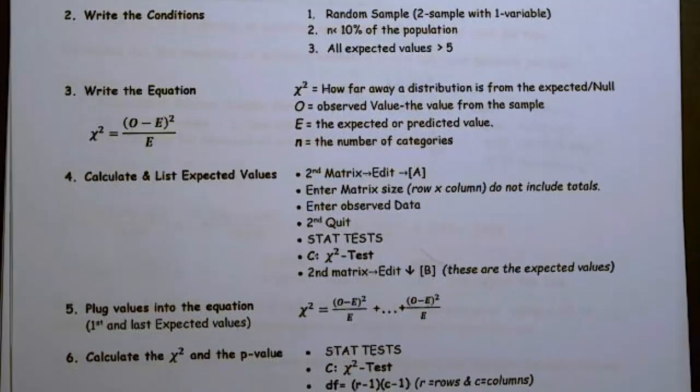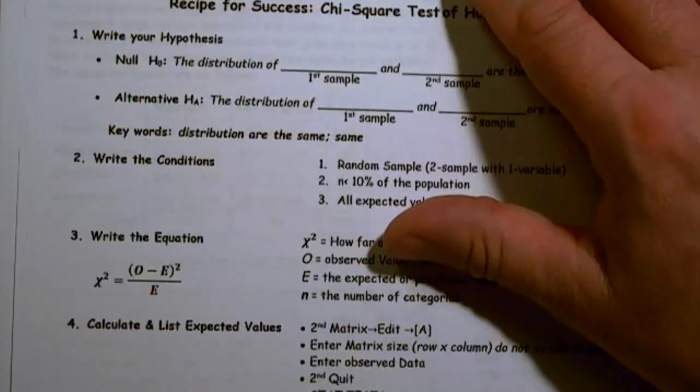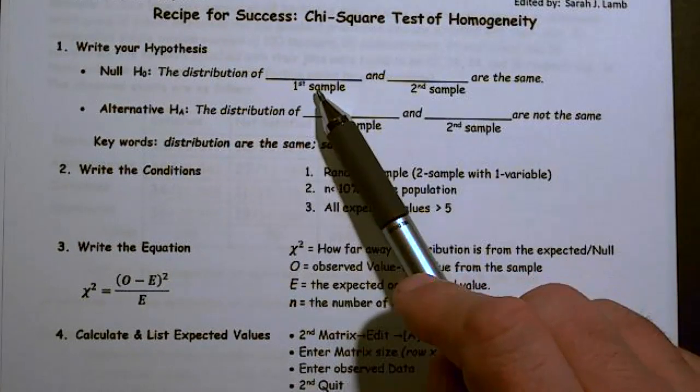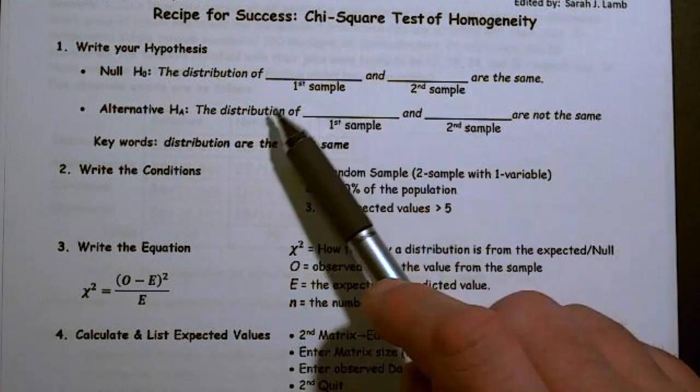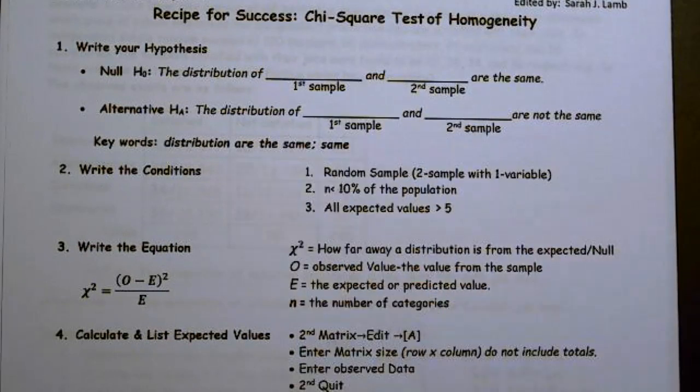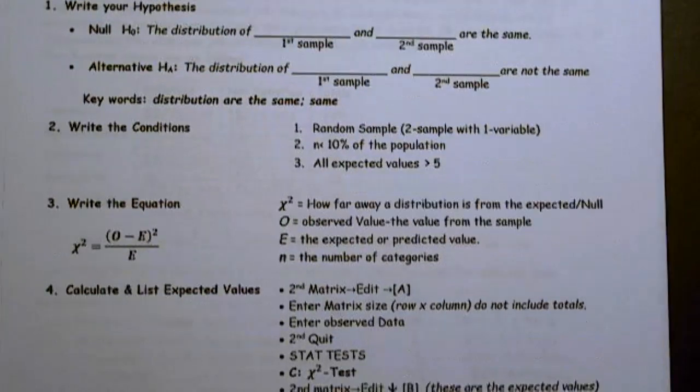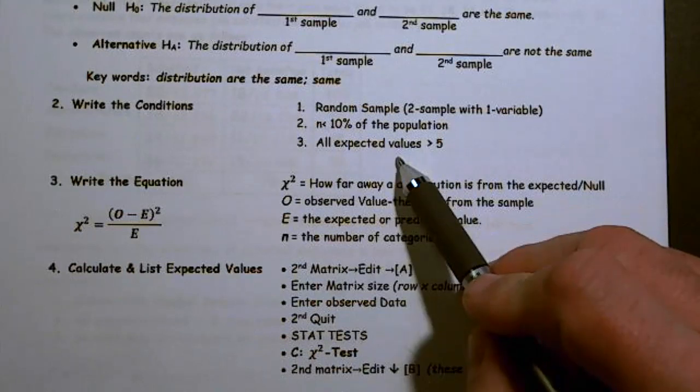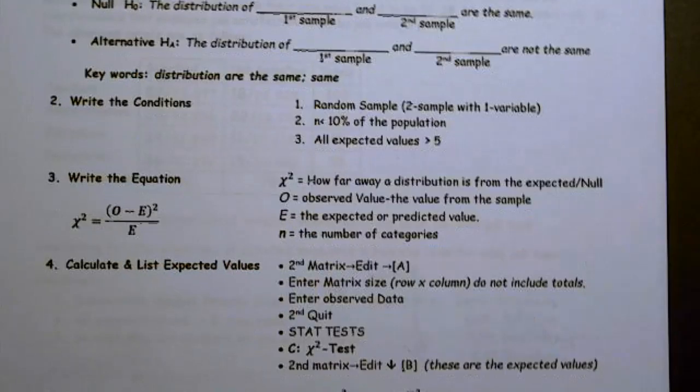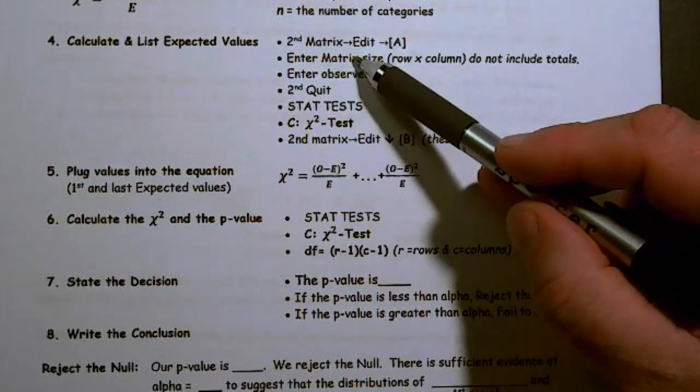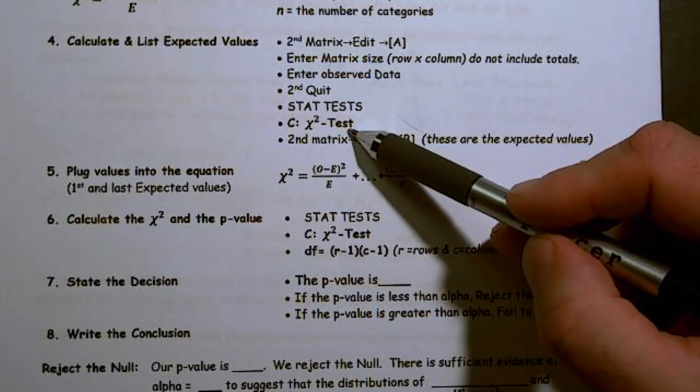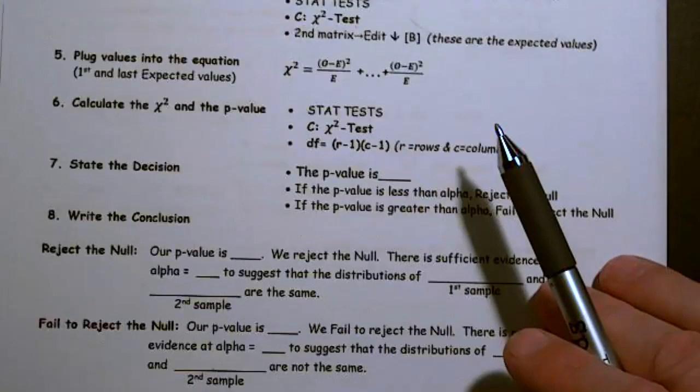Conditions are exactly the same, so I'm not going to spend time going over that. The distribution of the first sample and the second sample are the same - basically we're talking about the proportion. We have the random sample and is less than 10%, all expected counts must be greater than five. They'll run exactly like the test for independence, where we use the matrix. And then our conclusion: our p-value is whatever, we reject the null.